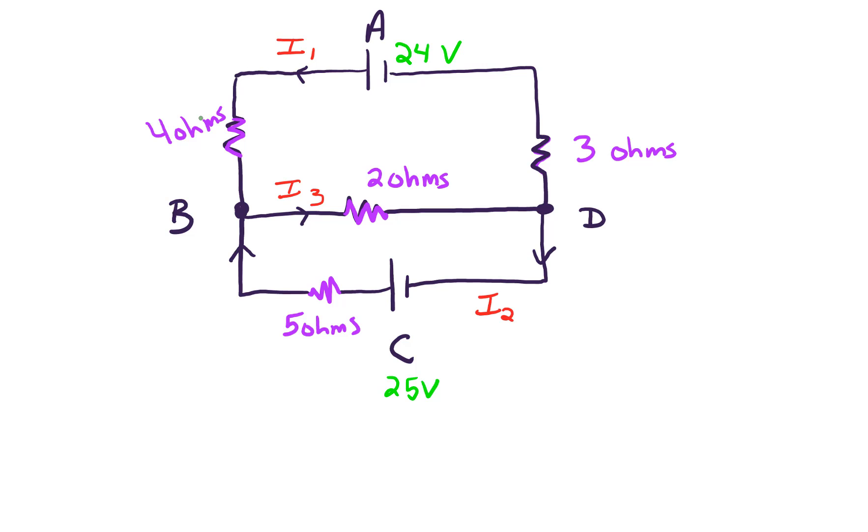Okay, so let's apply Kirchhoff's law number one. And that says current in equals current out. So at B, the current in, we've got I1 coming in, I2 is coming in, and that better equal I3 going out.